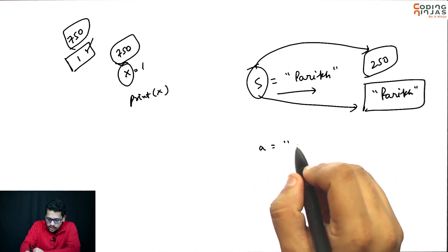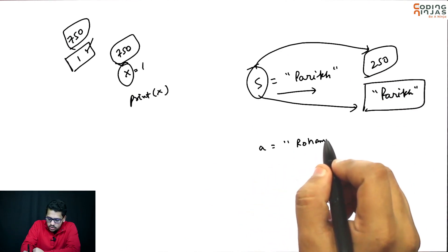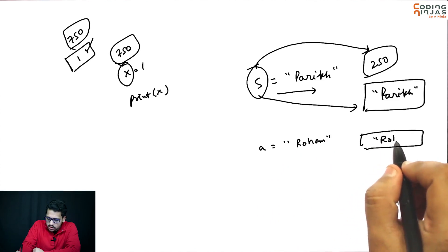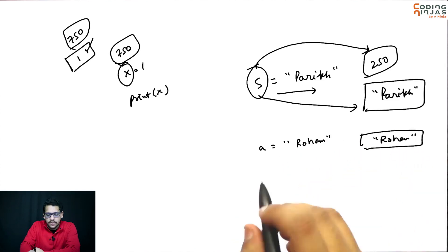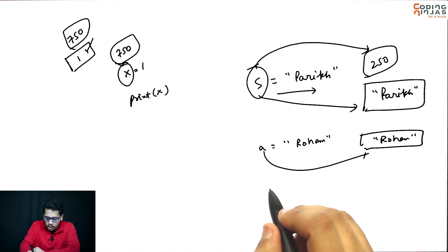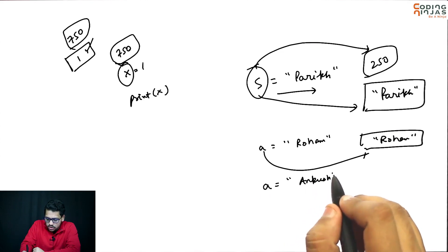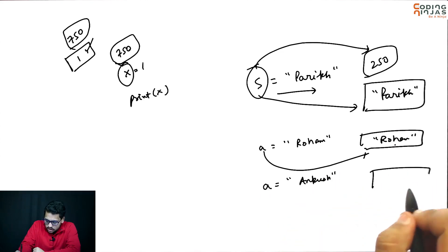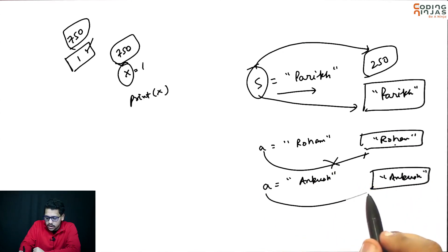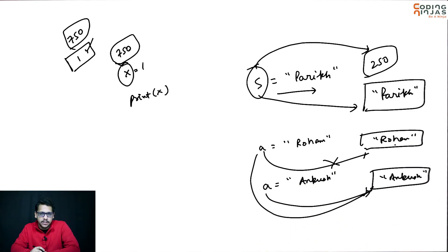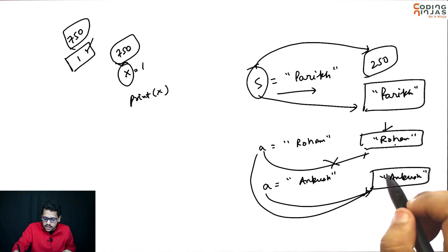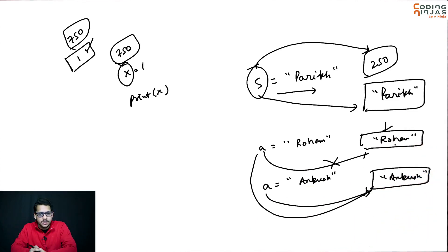Similarly, if you do a equal to 'Rohan', so 'Rohan' will be stored somewhere and a has the reference of it. Now if you do a equal to 'Ankush', it will not change 'Rohan' — somewhere 'Ankush' will be created and a will now refer to that instead. So the references are changed; it does not change the original string, it changes the references, like it was happening in case of variables.